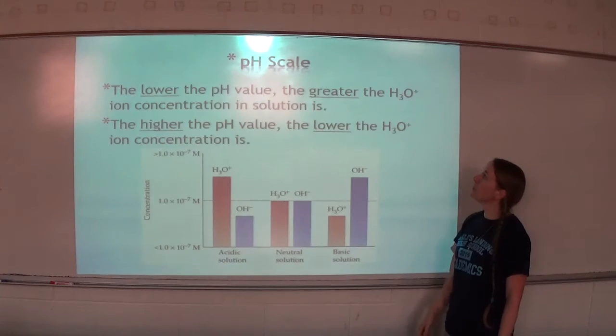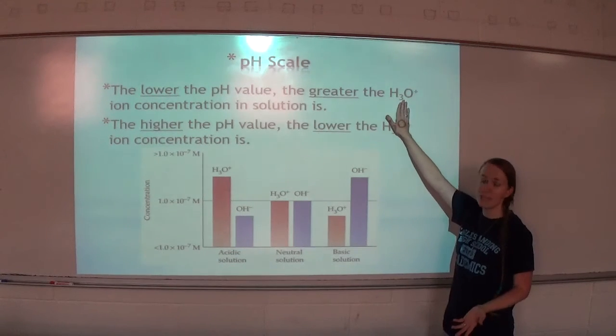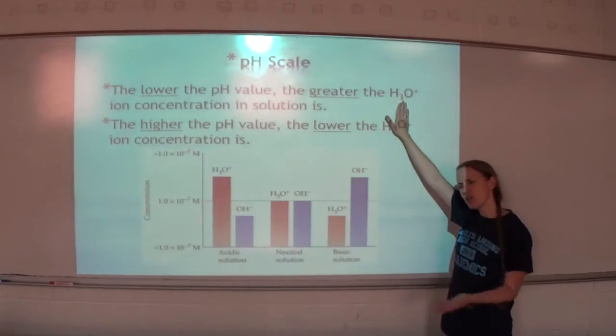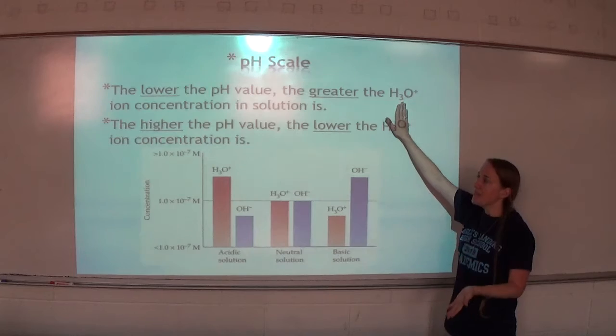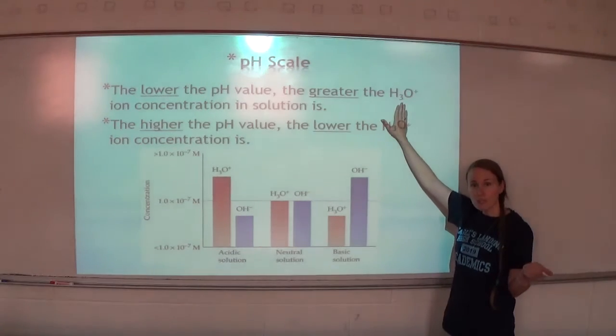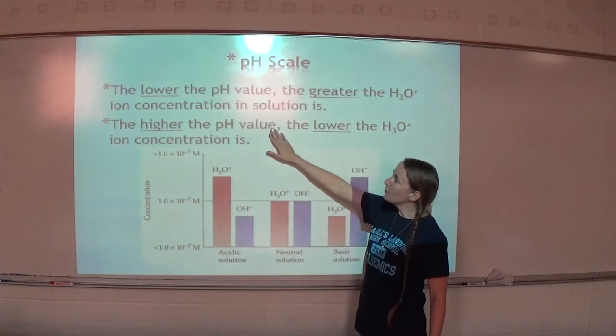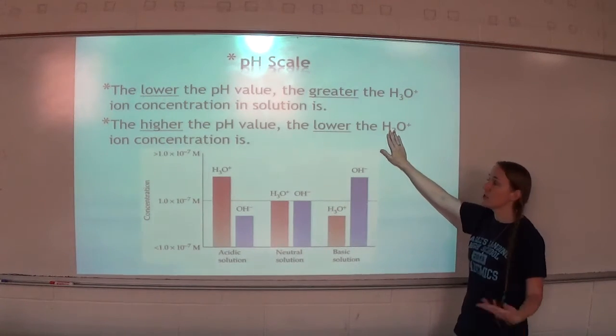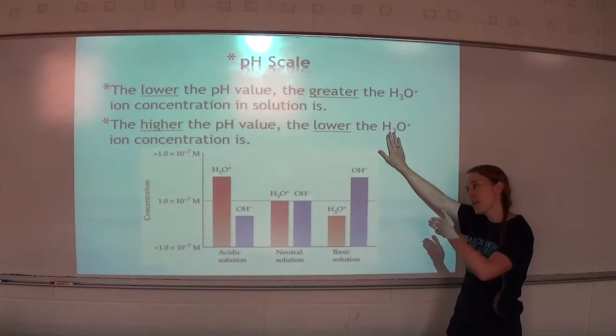The lower the pH value, the greater the H3O+ ion concentration in a solution is. I know that seems weird, but it's based off a logarithm. pH is calculated by doing the negative log of H+ concentration, so it ends up making it seem backwards. The higher the pH value, the lower the H3O+ ion concentration is. The less like an acid, the more like a base it is.